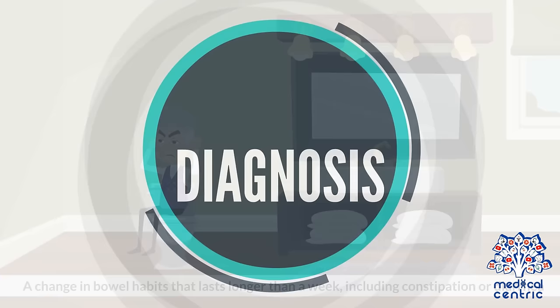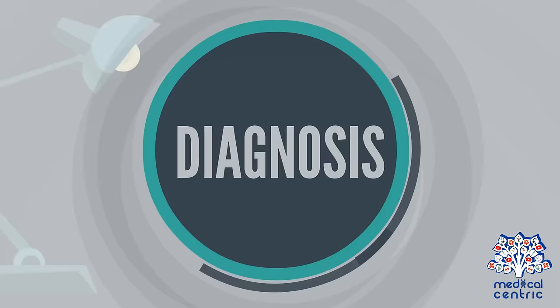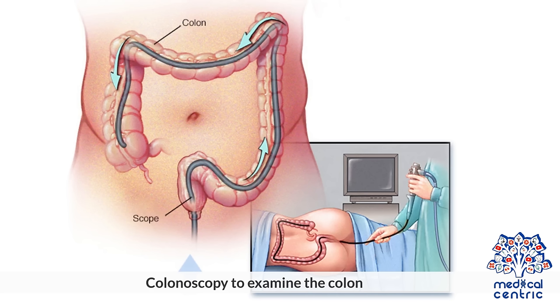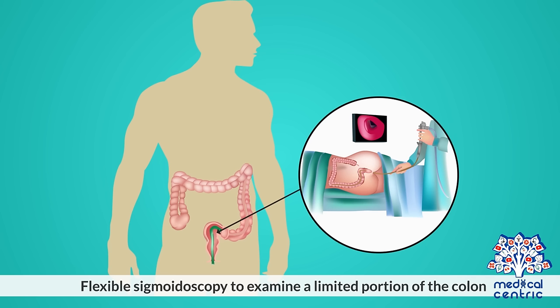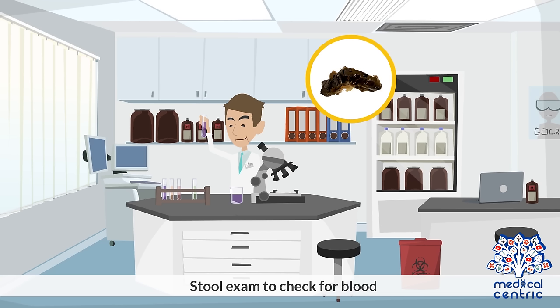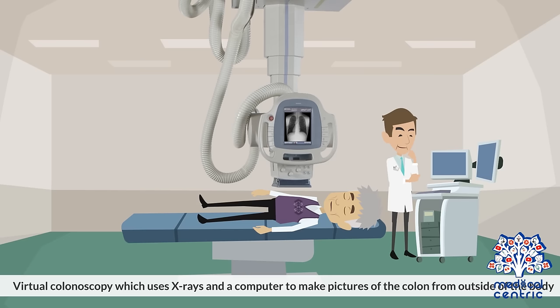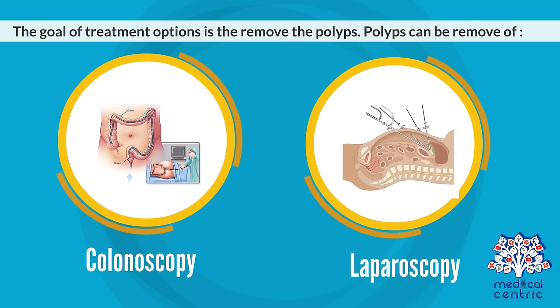To make a diagnosis, the doctor will review your medical history, assess risk factors, and carry out a physical examination. If a colorectal polyp is suspected, the doctor may recommend further tests, which may include colonoscopy to examine the colon, flexible sigmoidoscopy to examine a limited portion of the colon, stool exam to check for blood, and virtual colonoscopy, which uses x-rays and a computer to make pictures of the colon from outside of the body.